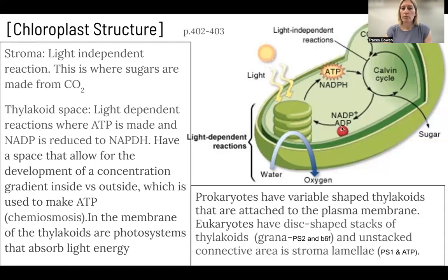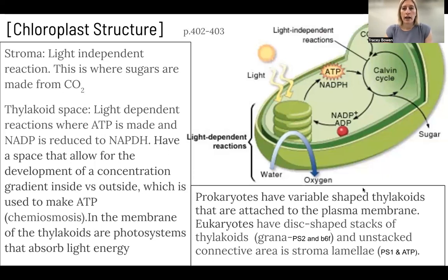Prokaryotes have variable shaped thylakoids that are attached to the plasma membrane on the inside. Eukaryotes have disc-shaped stacks of thylakoid and unstacked connective areas, which are called the stroma lamellae. In the grana membrane — the stacks — you're going to find more photosystem two and B6F, and then in the stroma lamellae you're going to find more photosystem one and ATP synthase. We'll talk a bit more about that as we see those things.